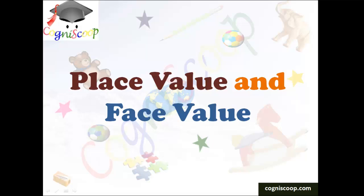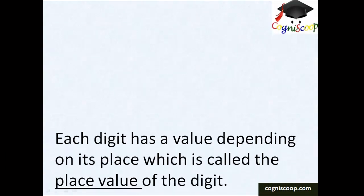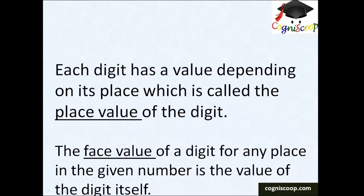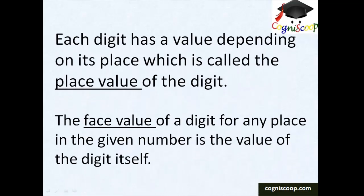Place value and face value. Each digit has a value depending on its place, which is called the place value of the digit. The face value of a digit for any place in the given number is the value of the digit itself.